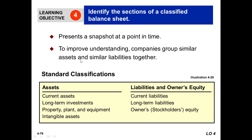The balance sheet presents a snapshot at a point in time and improves understanding. Companies group similar assets and similar liabilities together. That means similar assets — current assets, including long-term investments, property, plant and equipment, and intangible assets. On the other hand, liabilities and owner's equity: we have current liabilities, long-term liabilities, and owners' or stockholders' equity. This is our balance sheet — asset side and liabilities and owner's equity side.